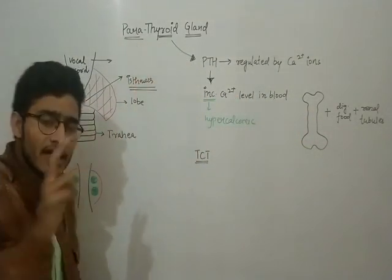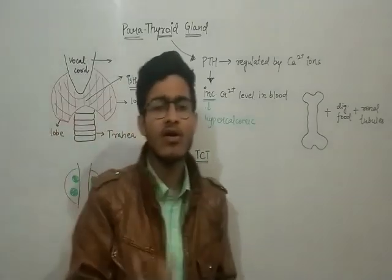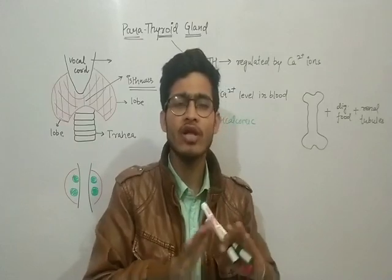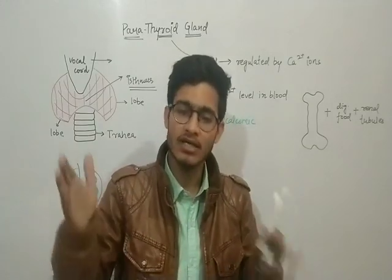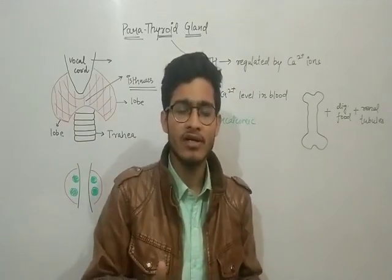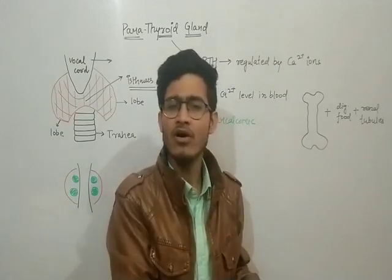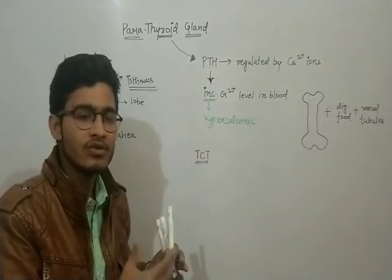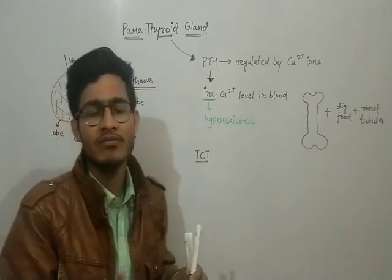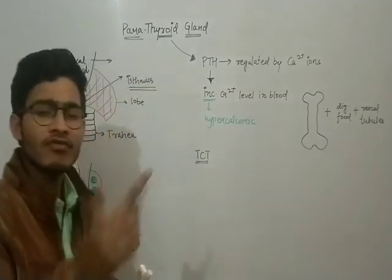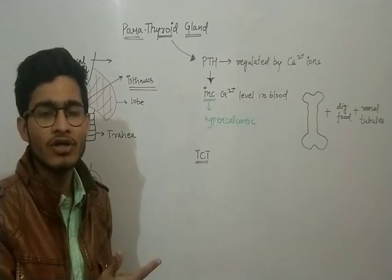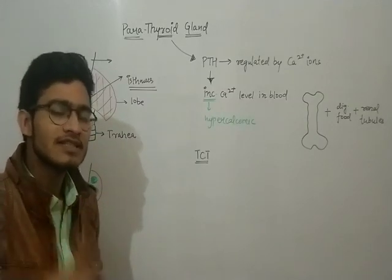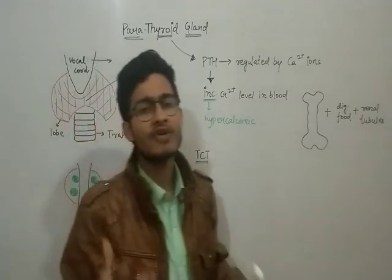Now the parathyroid gland secretes a hormone that is called as PTH or the parathyroid hormone. So you don't have to remember anything, the gland's name is the hormone name. Parathyroid gland, parathyroid hormone. It is very required to have a good amount of calcium because calcium is very important for the formation of parathyroid hormone. And the interesting thing is that parathyroid hormone is itself regulating the amount of calcium in our body.